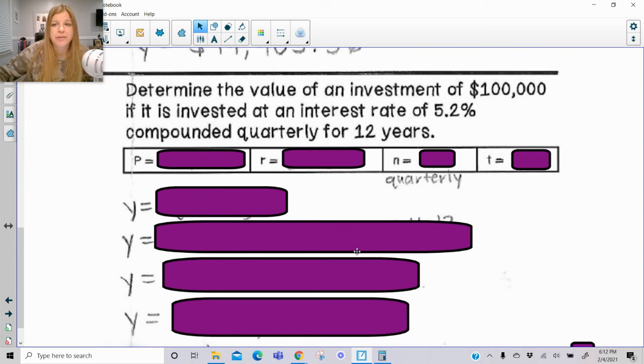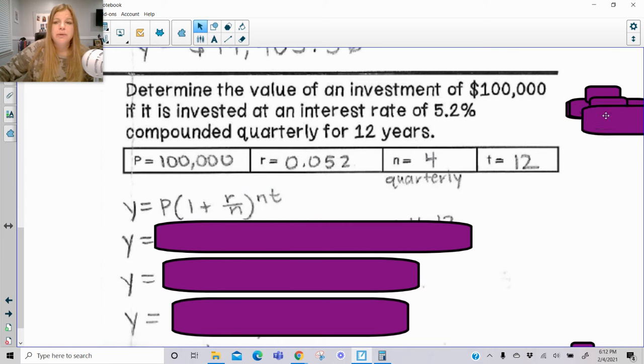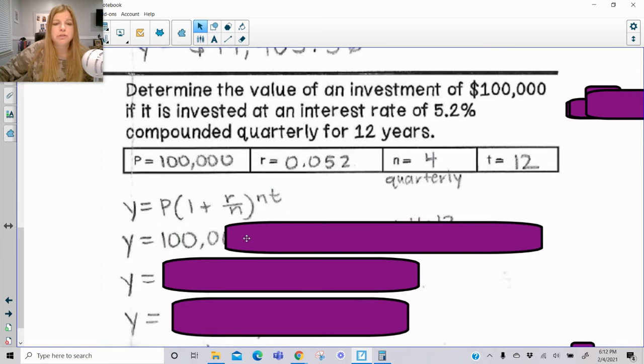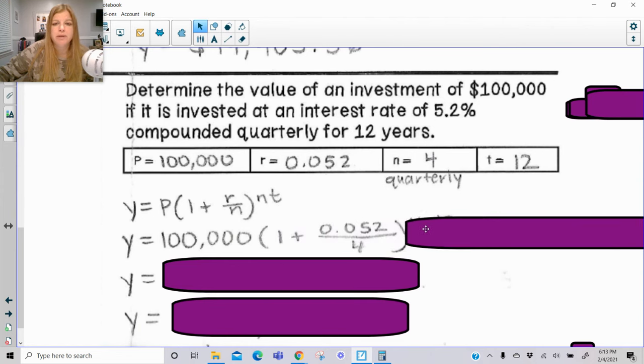Determine the value of an investment of $100,000. So that's my principal. If it's invested at an interest rate of 5.2%, so again, move the decimal two spots to the left, this is what it looks like, compounded quarterly. How many quarters are there in a year, or how many quarters in a dollar? Quarterly means 4 times. And my 12 is my years. So I have my formula, so let's take a look at what this looks like. So it's 100,000 times 1 plus, remember, it's R over N.